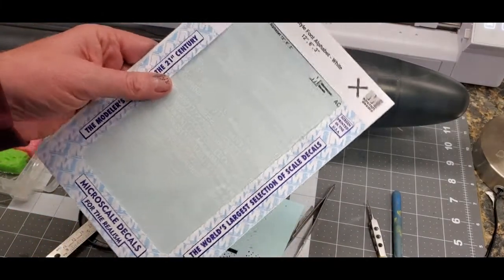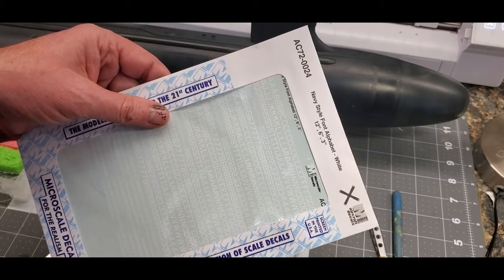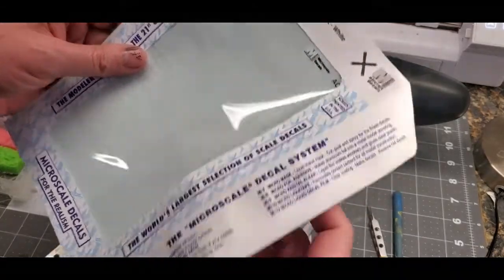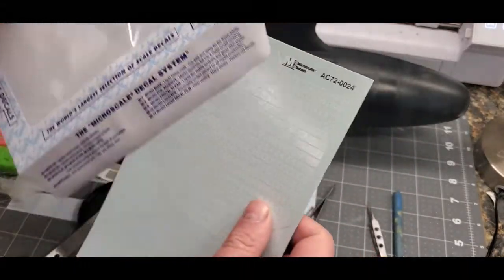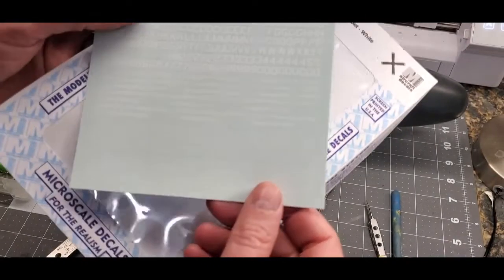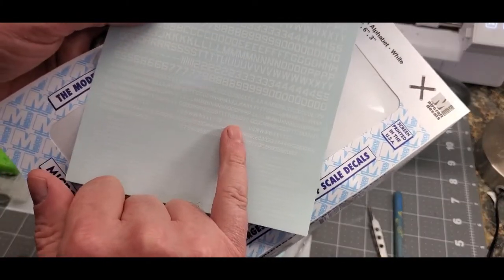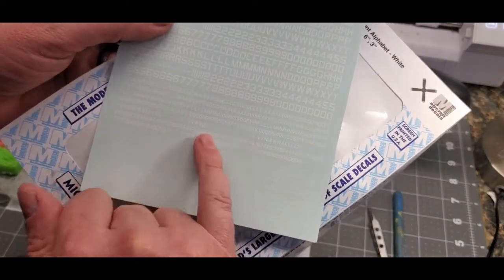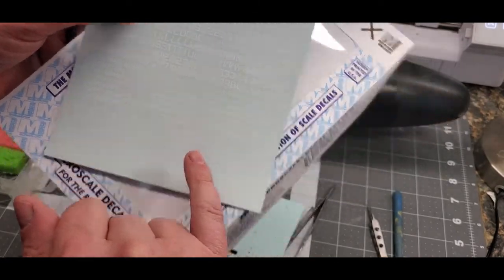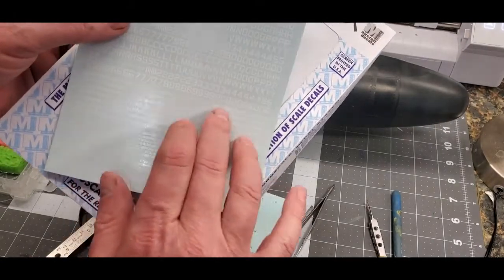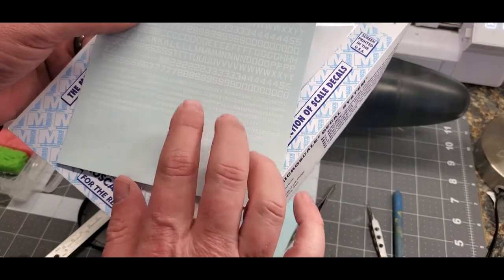My solution was to order a set of Microscale decals. These are 72nd scale Navy font in white. As everybody knows, Microscale decals just work great. I'm going to use these numbers right here. They're a little bit big but they're smaller than the Trumpeter ones. I think they'll be okay, they won't look gross or out of place.